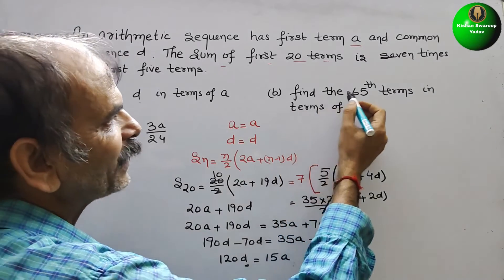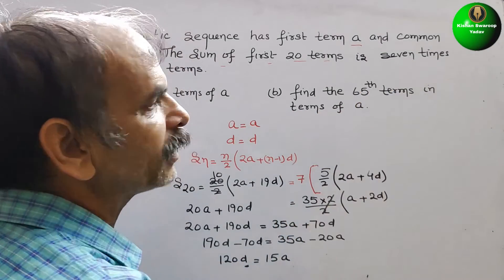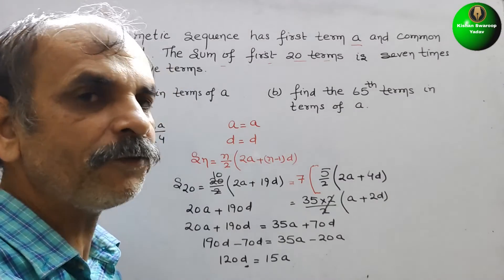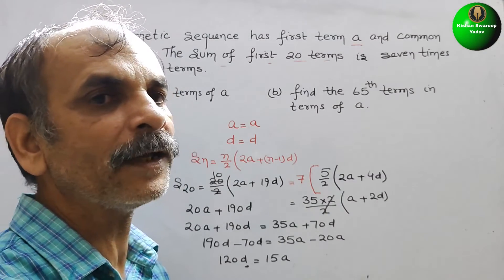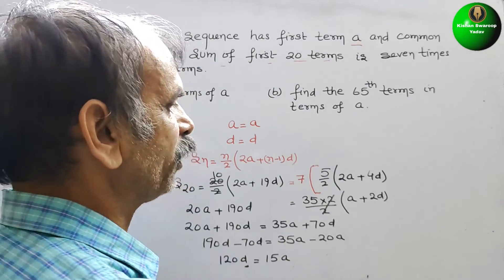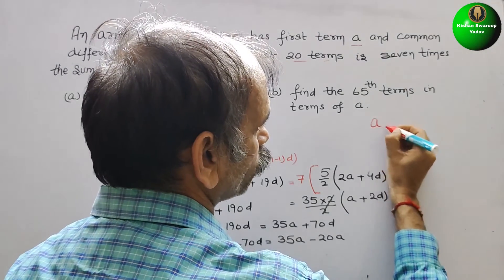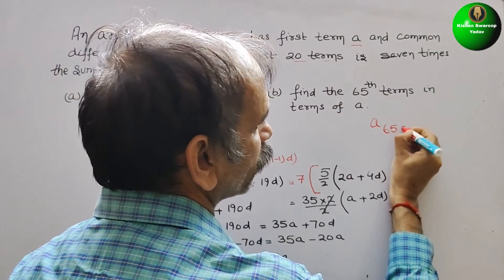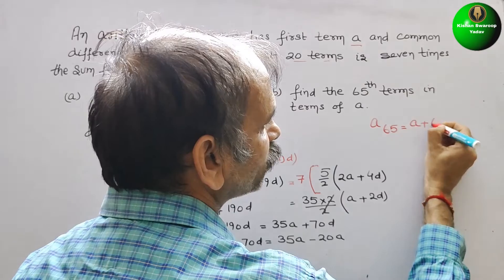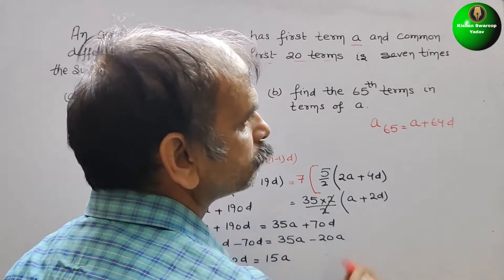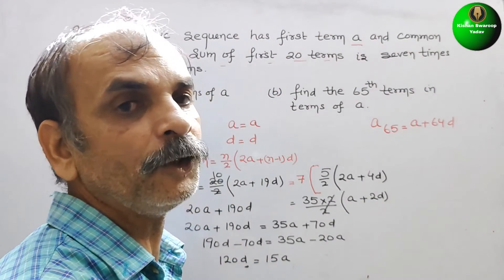Now they have told find the 65th term in terms of A. So we have to find A_65. So A_65 is what? A plus 64D.